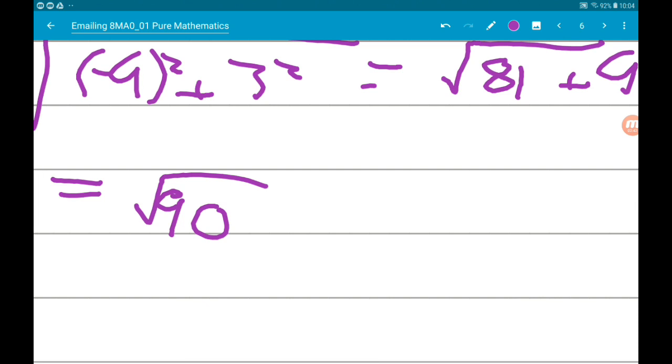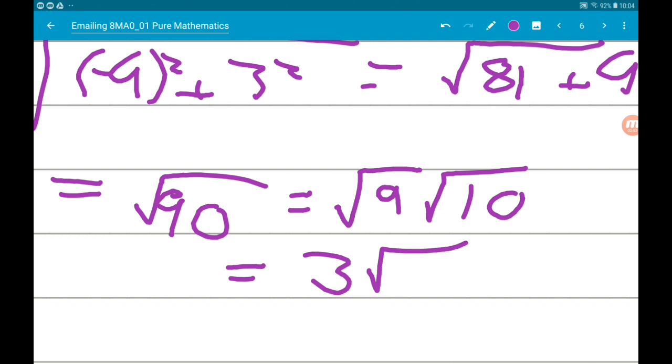The square number that goes into 90 is 9, so this is root 9 root 10. Square root of 9 is 3, so we get 3 root 10. Cool.